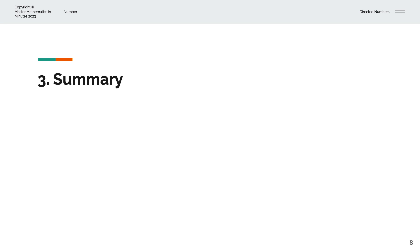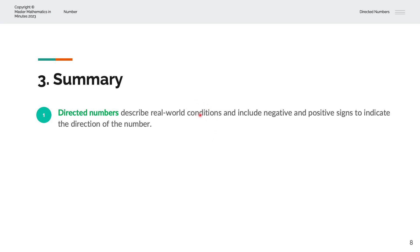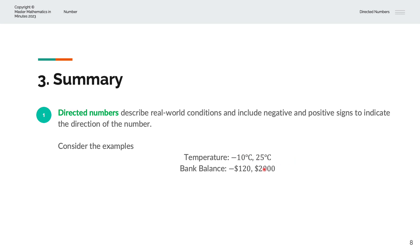To summarise, Directed Numbers describe real-world conditions and include negative and positive signs to indicate the direction of the number. For example, temperature can be minus 10 degrees Celsius or 25 degrees Celsius, a bank balance of minus 120 dollars and positive 2000 dollars, and a sea level of minus 800 meters below sea level and 500 meters above sea level.